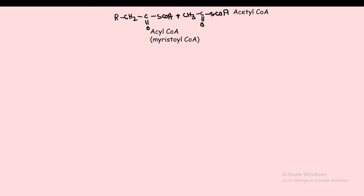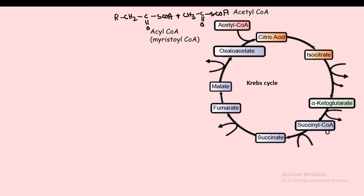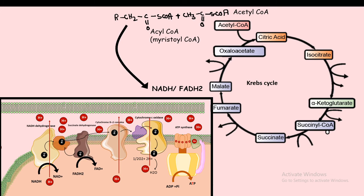Myristoyl CoA is ultimately broken down into acetyl CoA; each time acetyl CoA is produced it can be channeled into the Krebs cycle. In this conversion, several molecules of NADH and FADH2 are generated, and the acetyl CoA entering the Krebs cycle also produces NADH and FADH2. All of these are channeled to the electron transport chain, donating electrons while protons are pumped into the intermembrane space, and the proton gradient drives ATP synthase to generate ATP. This is the key goal of beta oxidation — to break down fatty acids during starvation to generate energy.